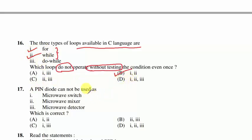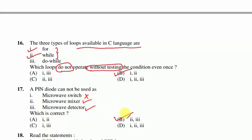Question 17: a PIN diode cannot be used as a mixer or detector; it can be used as a switch. Hence option B is correct.